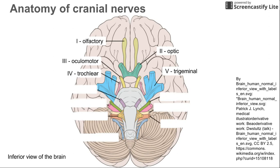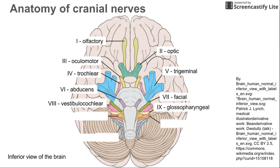Continuing down the side of the brain, cranial nerve six is the abducens, which is also involved in eye movements. Right next to that is cranial nerve seven, the facial nerve, shown in olive green. Right below that in pink is cranial nerve eight, the vestibulocochlear nerve.